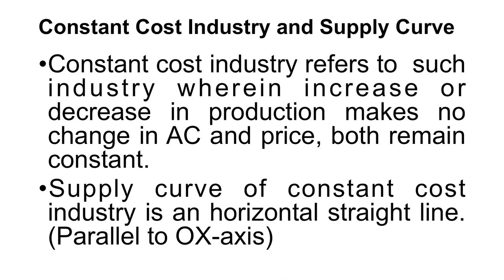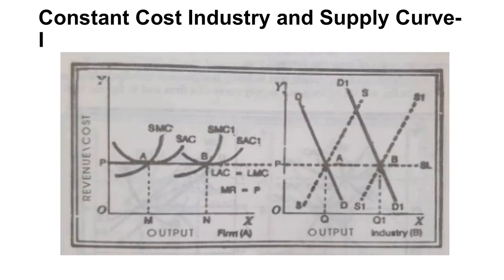The first condition is constant cost industry and supply curve. Constant cost industry refers to an industry wherein an increase or decrease in production makes no change in average cost and price — both remain constant. The supply curve of a constant cost industry is a horizontal straight line parallel to the X-axis. In the graph for the firm: when price is OP, output is OM, and SMC and SAC intersect at point A.